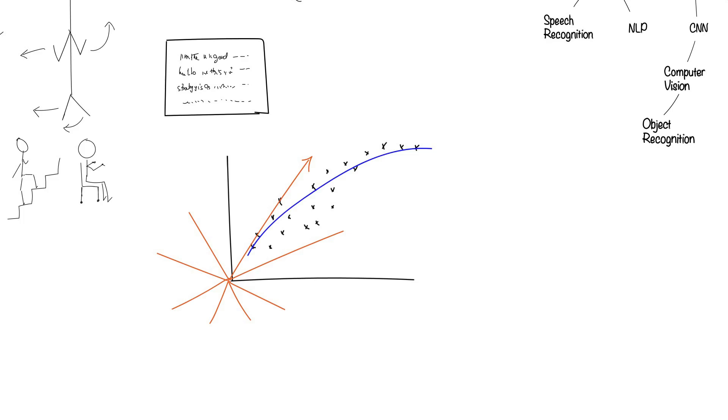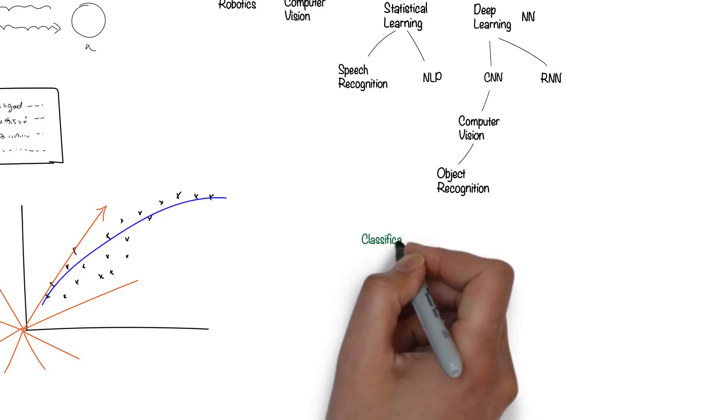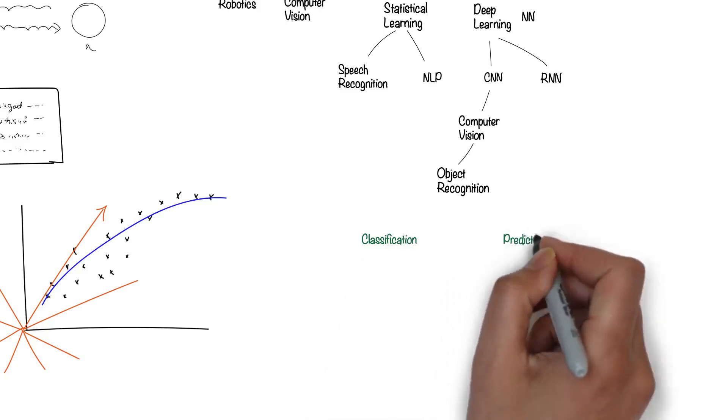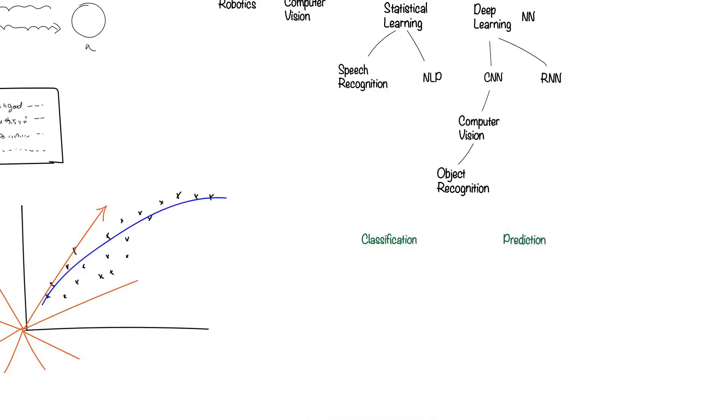Once it learns these patterns, it can make predictions that humans can't even come close to. We can use all these machine learning techniques to do one of two things, classification or prediction.